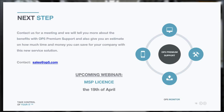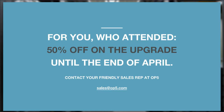Next steps: if you would like to know more, please contact your sales rep or reach us at sales@op5.com. If you want to know more about pricing or how to calculate your price, we will help you with that. There is also an upcoming webinar on the 19th of April about the MSP license. For attendees of this webinar, we are offering 50% off the upgrade until the end of April — contact your sales rep or email sales@op5.com to get that.